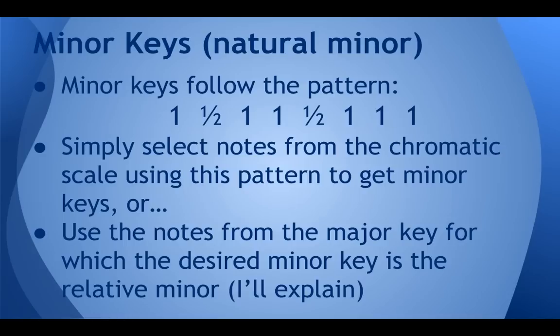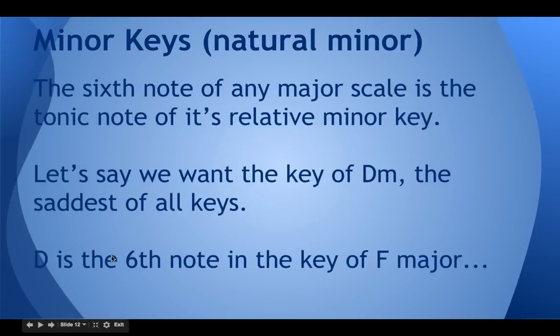But the other way to go about it, there's a shortcut, based on something called a relative minor. Every major key has a relative minor key. To explain this, the sixth note of any major scale, you can take that note and make it the tonic of the relative minor key. When I say tonic, I mean the note that everything begins and ends on. Let's say we want to do D minor, the saddest of all keys, according to Spinal Tap. D is the sixth note in the key of F major.